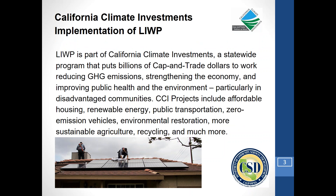LIWIP is part of California Climate Investments, putting cap-and-trade dollars to work in communities through a variety of agencies and projects, particularly in disadvantaged communities. Those communities are identified by a tool known as CalEnviroScreen, which initially had 19 different indicators including air pollution and socioeconomic indicators such as poverty. That tool enables CalEPA to identify the top 25% of census tracts in the state that experience undue burdens from those types of indicators.